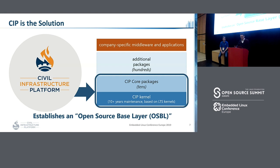Basically, the software stack of the product consists of the Linux kernel and core packages — around 100 packages provided in open source distributions — and the product-specific software. CIP is focusing on establishing an open source base layer which consists of a super long-term supported kernel plus CIP core packages. Most distributions focus on providing various packages to cover general requirements, but the target of CIP is those bottom two things.